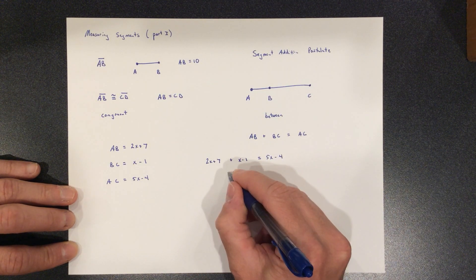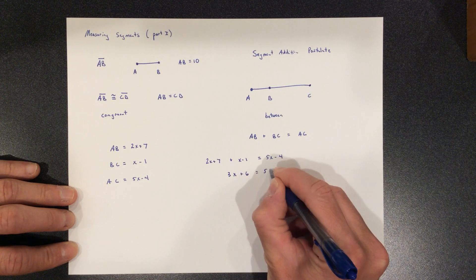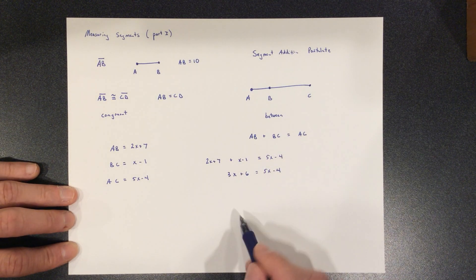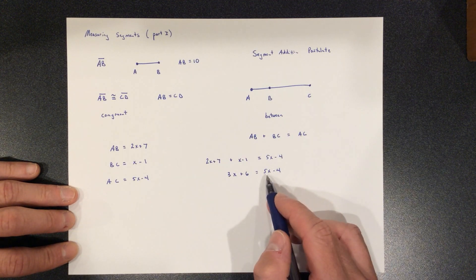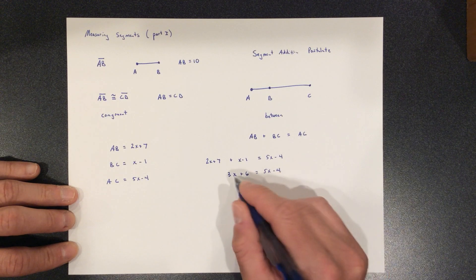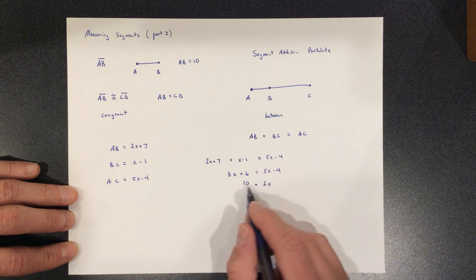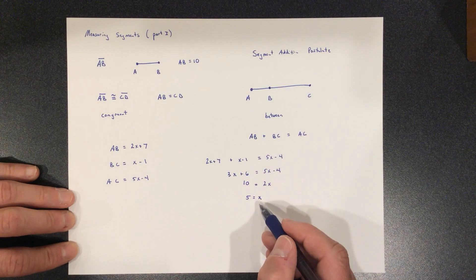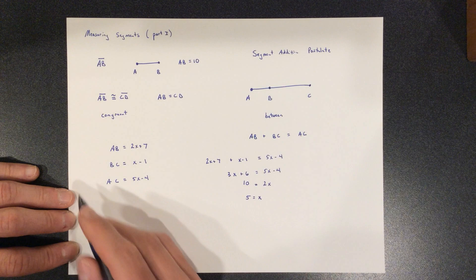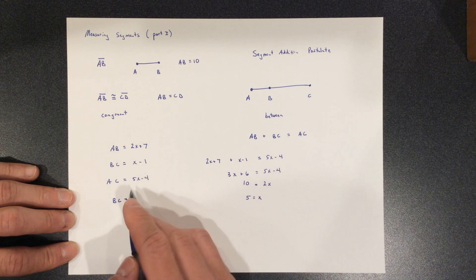I'm going to combine like terms on this side and get 3X plus six equals 5X minus four. I'm going to notice that I have five X's here and three here. So I'm going to move all the X's to this side. Okay. 5X and 3X is going to make 2X. And I'm going to move that four over there and make 10. And then I'm going to divide by two and get five equals X. And again, that's not your solution. I actually asked for, how long is BC? And it turned out that BC, if you plug in five here, is four.